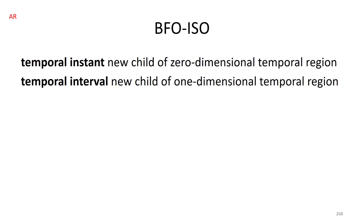There are two new terms in BFO ISO: temporal instant and temporal interval. The reason we have these terms is that a temporal region can be zero-dimensional but not be a temporal instant. An example would be two temporal instants together — they do not make a temporal instant, but they do make a zero-dimensional temporal region.